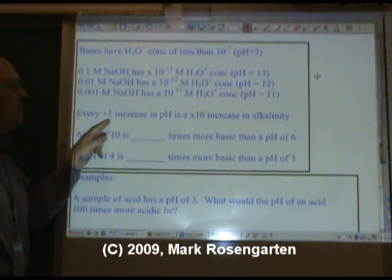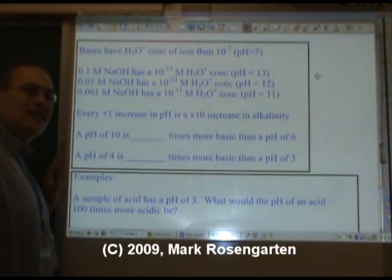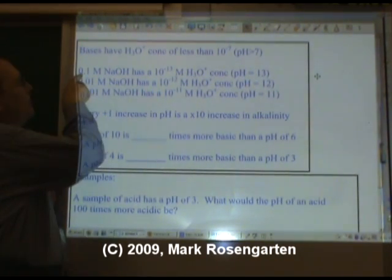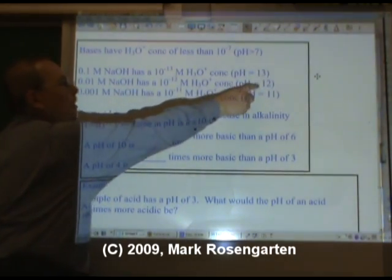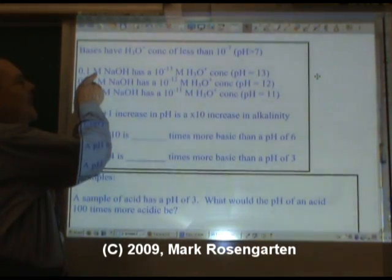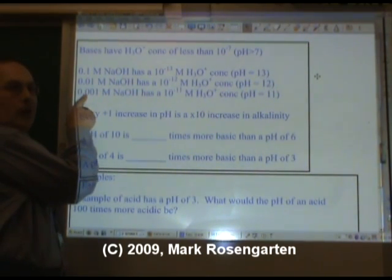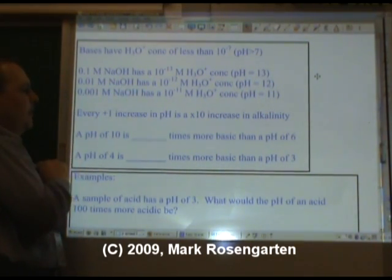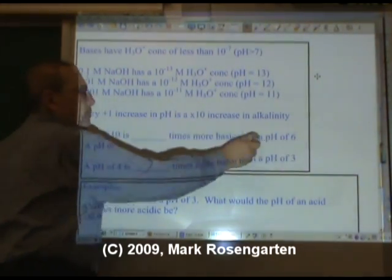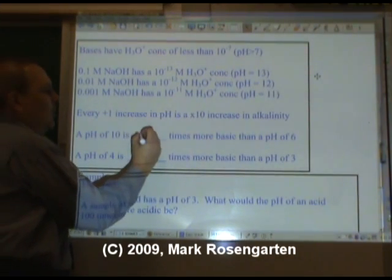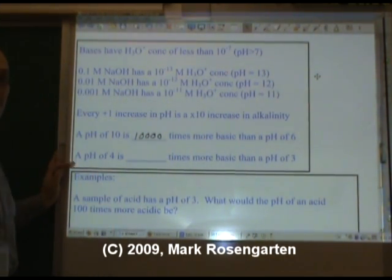So as you can see, every plus 1 increase in pH is a tenfold increase in alkalinity, or how basic it is. This is ten times stronger than that, its pH is one more than that. Therefore, this base is ten times stronger than that base, but a hundred times stronger than that base. A pH of ten is four powers of ten different than a pH of six, one followed by four zeros. It's ten thousand times more basic.